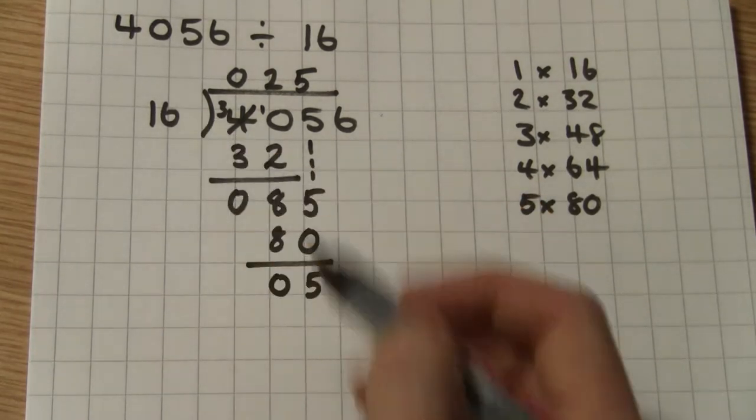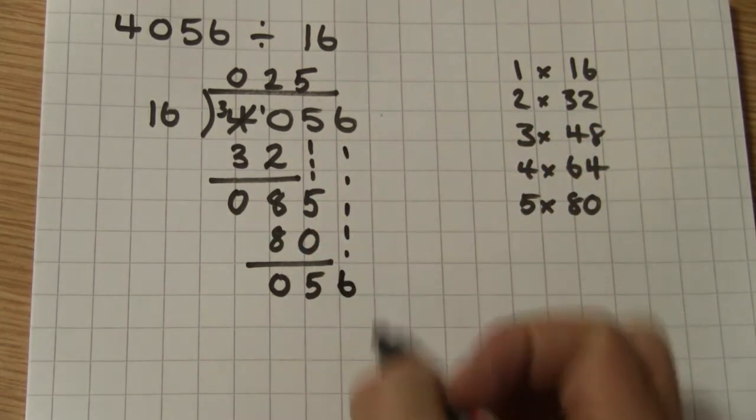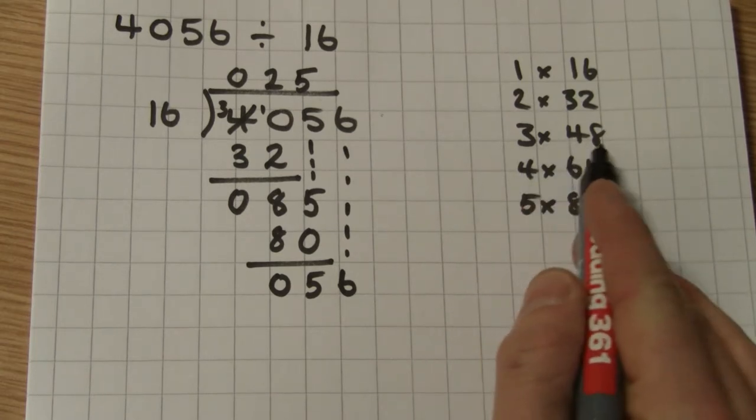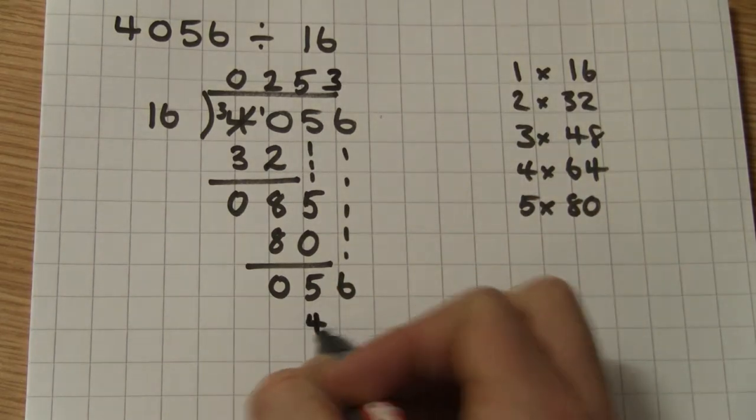Nearly done. 16 into 5 doesn't go, so I'm going to bring down my 6. Now, 16 into 56. Again, let's check our times table. It goes three times.